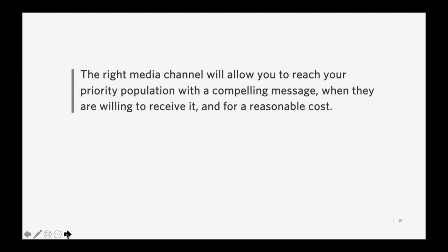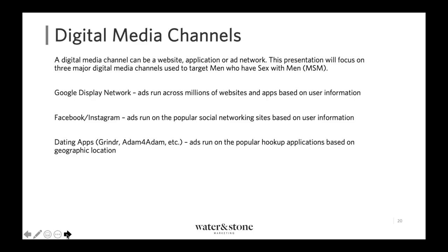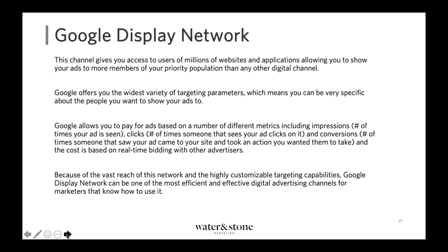Now we've talked about barriers and planning — let's talk about different media channels. The right media channel will let you reach the right priority population with a compelling message when they're willing to receive it, and for a reasonable cost. The different digital media channels we'll go over are: the Google Display Network, which lets you run ads across millions of websites and apps based on user information; Facebook and Instagram, the two most popular social media platforms; and last but not least, dating apps like Grindr, Adam for Adam, and others.